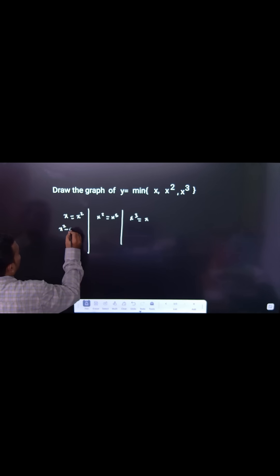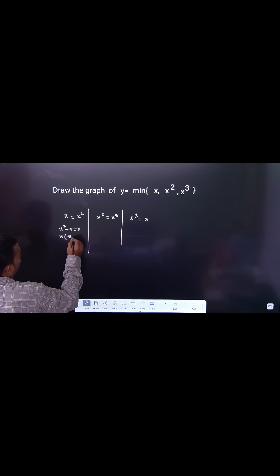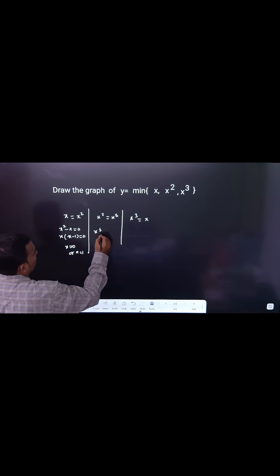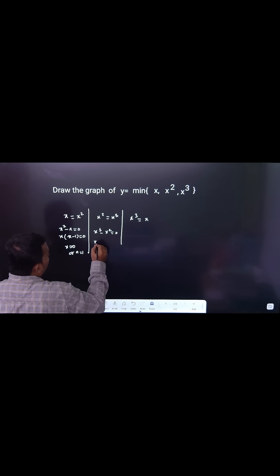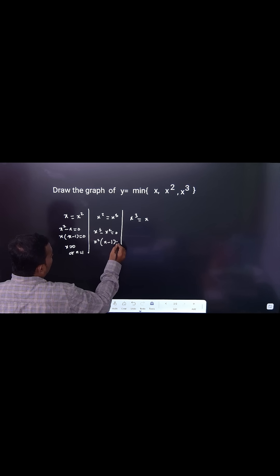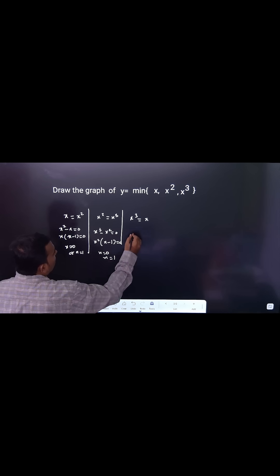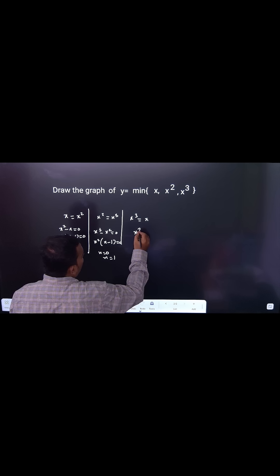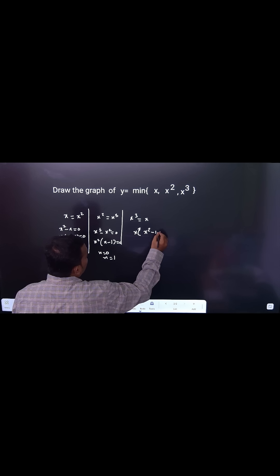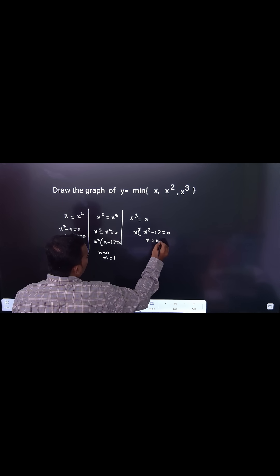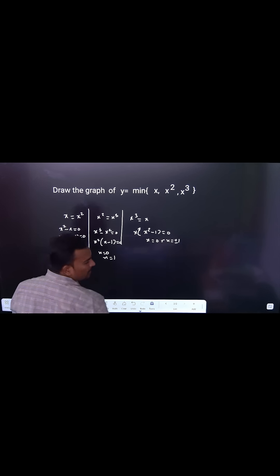If you take x square minus x equal to 0, take x common: x minus 1 equal to 0, either x equal to 0 or x equal to 1. In this case, x cube minus x square is equal to 0, x square common, x minus 1 equal to 0, x equal to 0 or x equal to 1. If you take x cube minus x, x common gives x square minus 1 equal to 0, x equal to 0 or x equal to plus or minus 1.